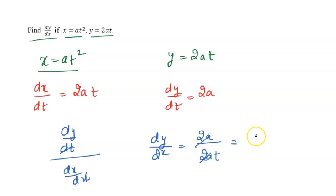Now 2a 2 will cancel out. So we will get here 1 upon t. The final answer of dy over dx equals 1 over t.